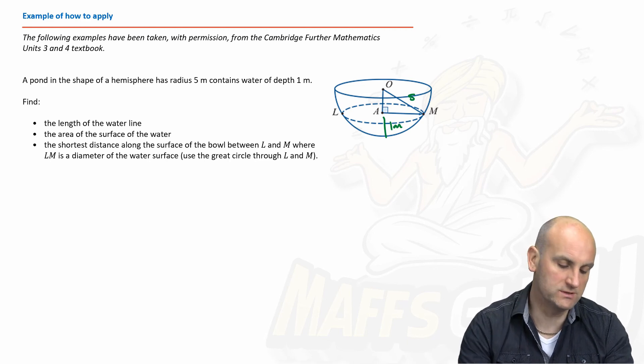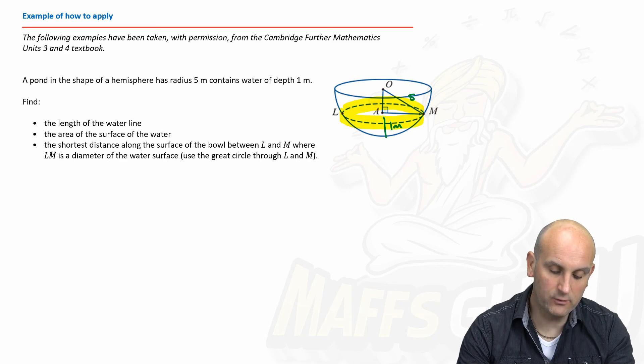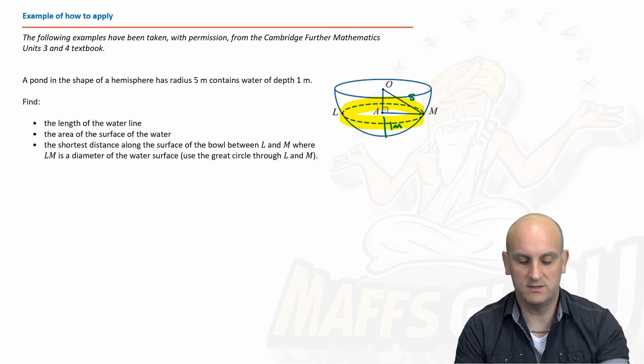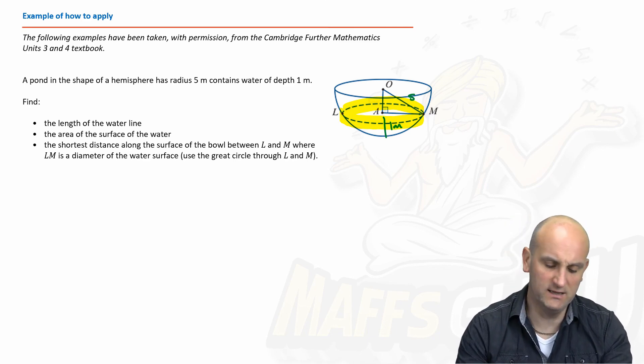Find the length of the water line. Now what on earth is the length of a water line? Basically it's this length all the way around here. So the water line is the line of water and it wants to know the length. That's another way of saying find the circumference.